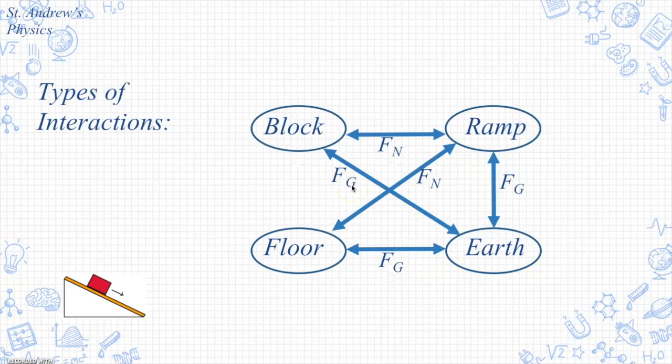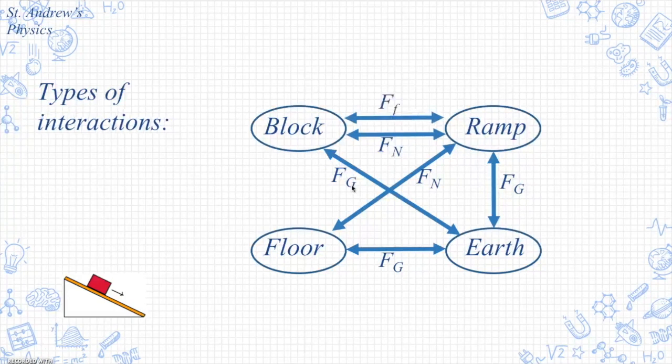Now we notice that this block is sliding at constant velocity down the ramp. We may want to consider that there may be another interaction, though there may not be any other objects, and we recognize that sliding at constant velocity there's another interaction, friction. I went ahead and labeled this as F sub F for friction.